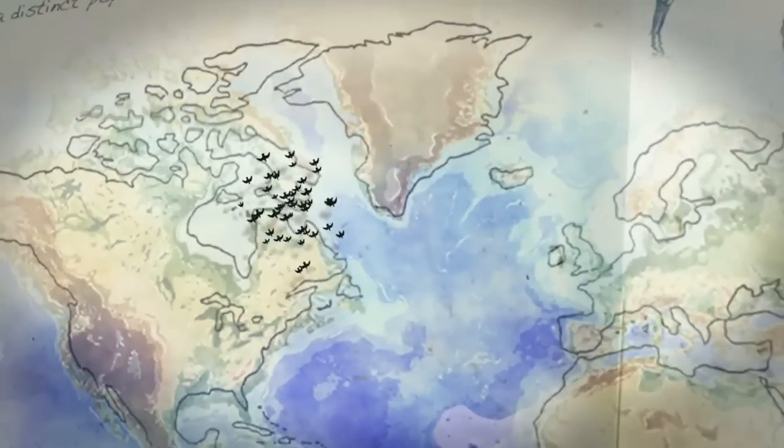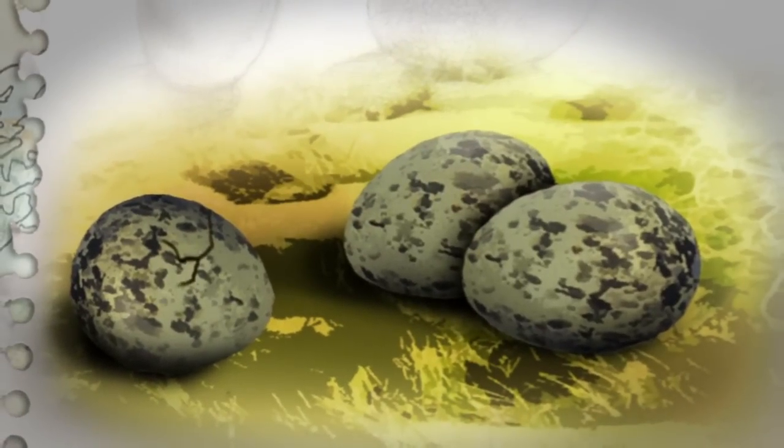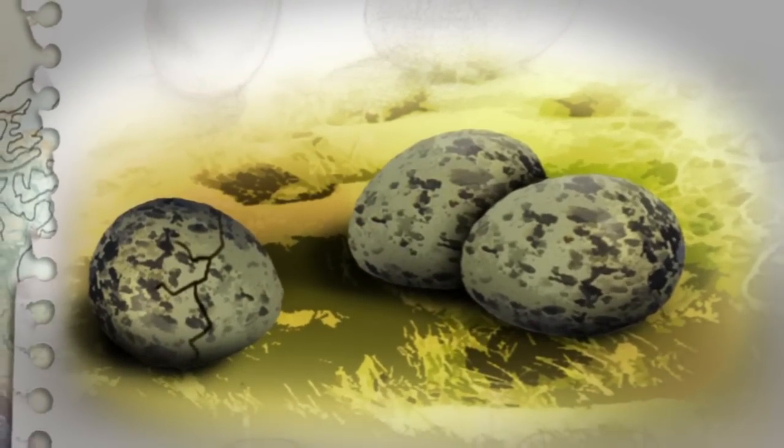A clutch of eggs begins to hatch at the beginning of July. The adult females usually begin flying south a few days after their eggs have hatched.